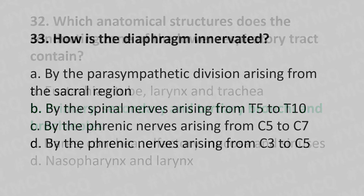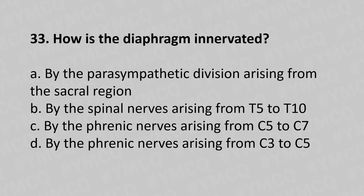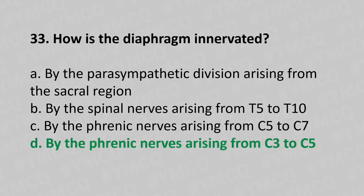Now move to our 33rd question. How is the diaphragm innervated? Option A: By the parasympathetic division arising from the sacral region. Option B: By the spinal nerve arising from T5 to T10. Option C: By the phrenic nerve arising from C5 to C7. Option D: By the phrenic nerve arising from C3 to C5. And the answer is Option D, by the phrenic nerve arising from C3 to C5.